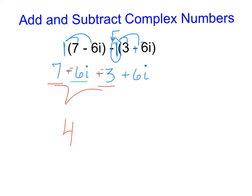If I then look at my imaginary parts, those imaginary parts together, negative 6 plus 6i become plus 0i. Now if you have 0 times i, you don't really have to write that in there because 0 times anything is 0. So our final answer here would be the real number 4 with no imaginary part to it.